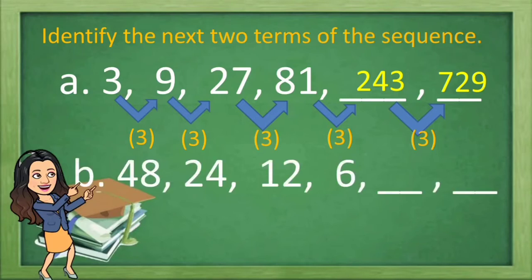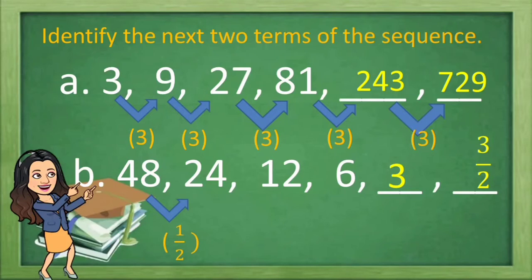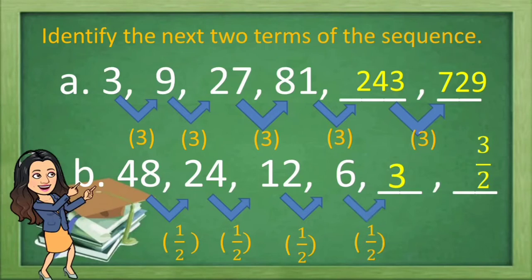Another item: 48, 24, 12, 6, blank, blank. The next two terms are 3 and 3 halves or 1.5. Because if you multiply the first term by 1.5, you will arrive on 24, the second term. Multiplying 24 by 1.5, you will have 12, the third term. And then 12 by 1.5 gives the fourth term. Therefore, to get the next term, you multiply 6 by 1.5 to get 3. And then multiplying 3 by 1.5, you will have 3 halves or 1.5 on the next term.